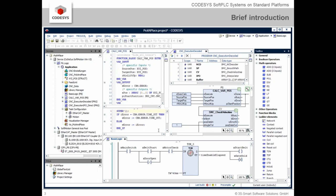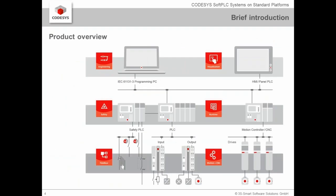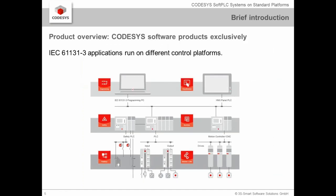You all know CODESYS, the IEC 61131 platform with its editors like the ladder diagram, CFC, or structured text. The most interesting question is where will the code you have programmed be executed? All our visualization, safety, fieldbus, and motion parts are configured and programmed on the engineering PC. But these need to be executed on another level — the controller level — where different control platforms are available.